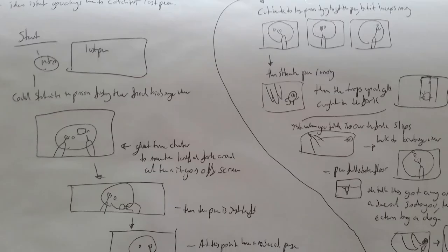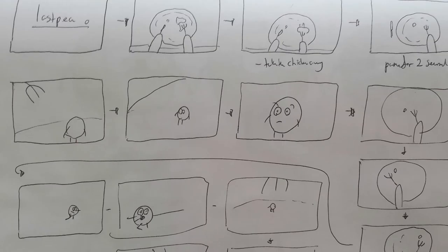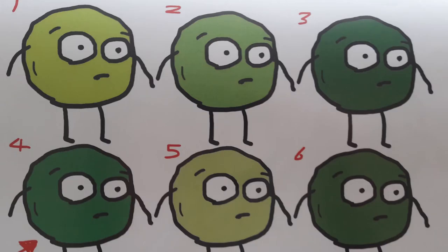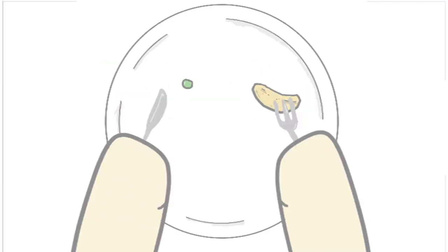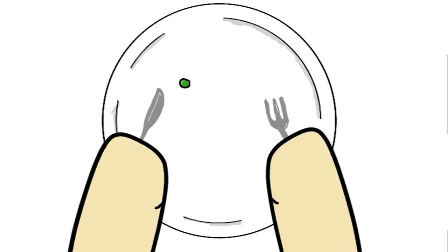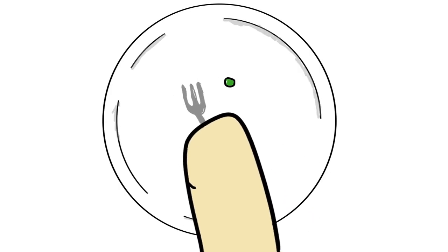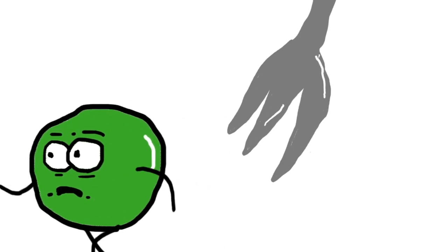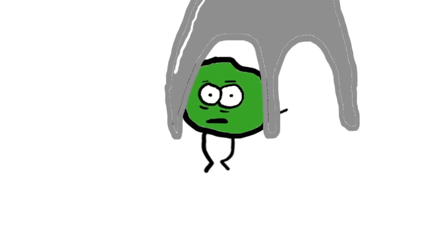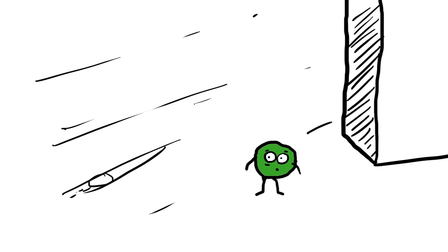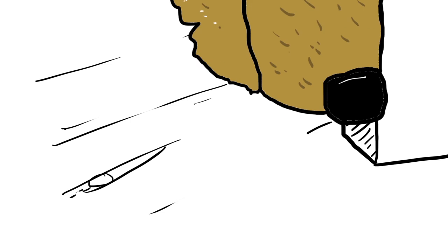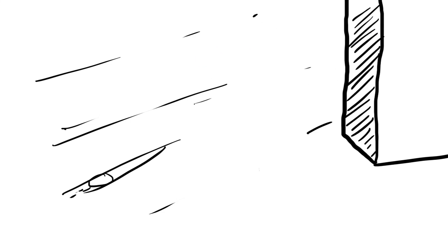I got on with another idea about a pea on the plate — you know, how it always gets away from you. I got on with concept design and storyboarding. Here's the final animation. With this I was also learning more about After Effects, not just Photoshop, but both of them put together. I think the result is really good. I quite like this animation — it's very me, and I was really happy with the end result.